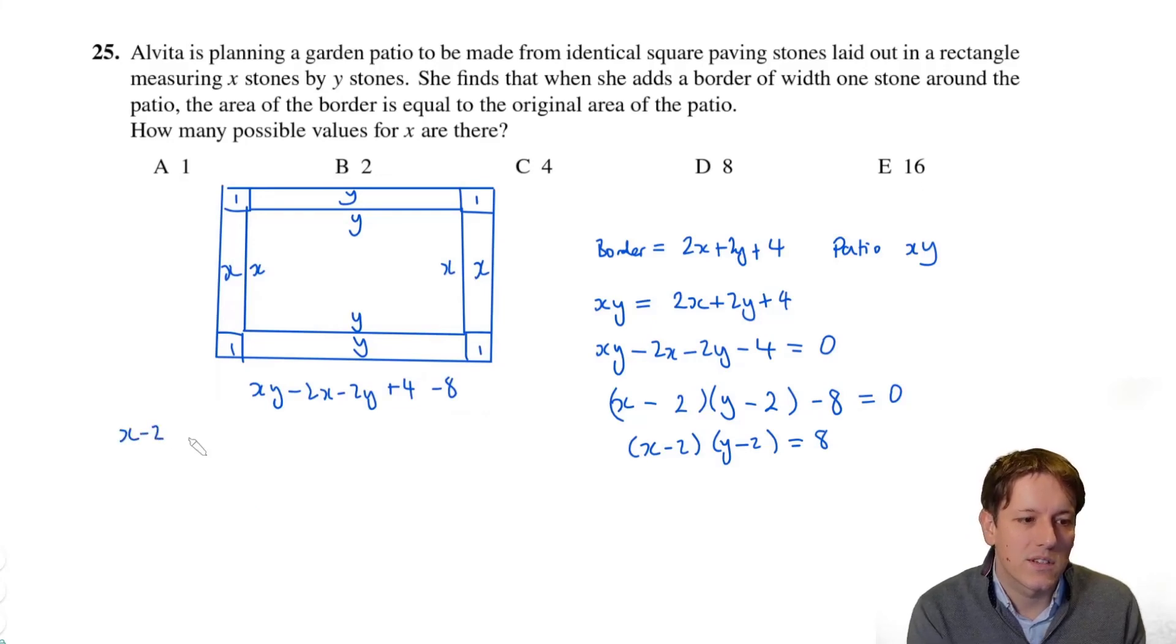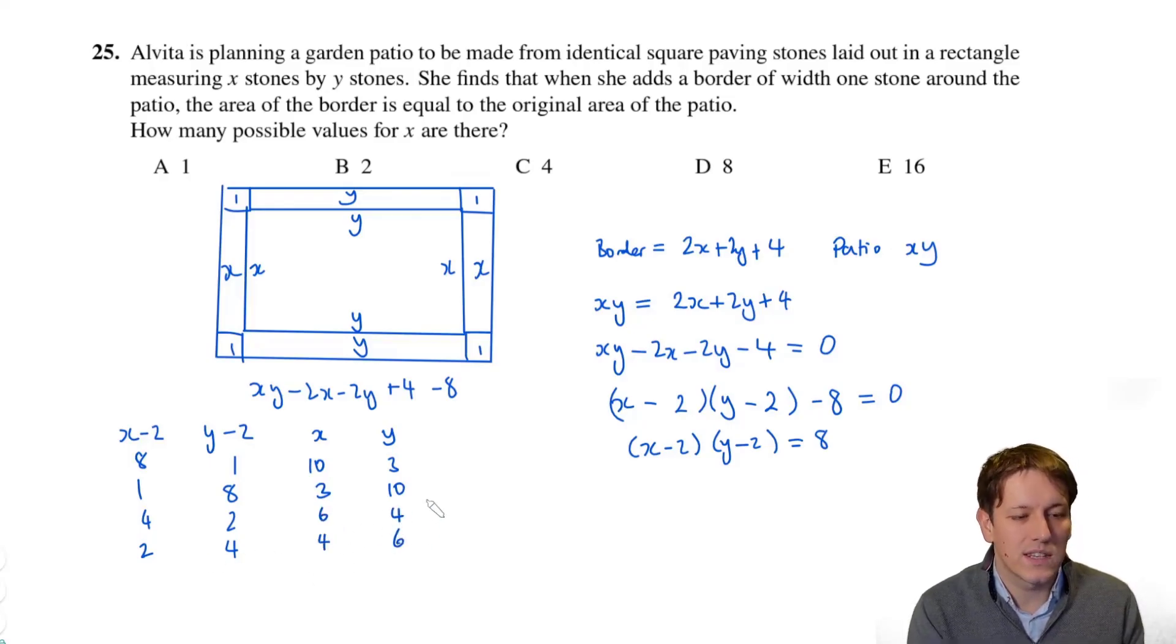So I could perhaps start making a little table x minus 2 and y minus 2. So it could be 8 times 1, it could also be 1 times 8, it could be 4 times 2, or it could be 2 times 4. And then we can just check that that gives us sensible values for x and y here. So if I add 2 to each of these, I'd get x is 10 and y is 3, x is 3 and y is 10, x is 6 and y is 4, x is 4 and y is 6. And we can see we get four different possible values of x here, all that do make sense in the context of the question.